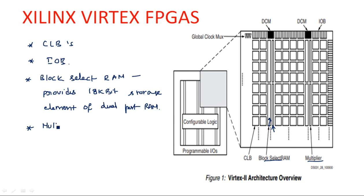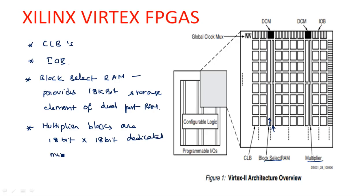The multiplier is another important and advanced feature of this FPGA family. Multiplier blocks are dedicated multipliers — the size is 18 by 18 bits, meaning up to 18 by 18 bits of multiplication can be performed. This allows a lot of arithmetic and logical operations; any multiplication operation in this family can be handled with the 18-bit multiplier.